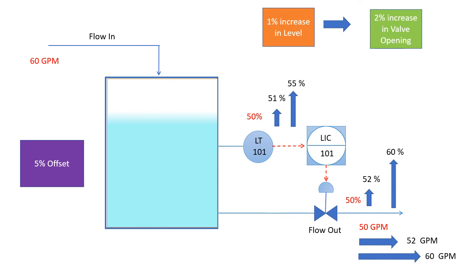Now take this example, where we have 2 percent gain and level is stuck at 55 percent. At this moment, if we provide 5 percent of manual reset, then the control valve opening will reduce to 55 percent, leading the flow to 55 GPM.